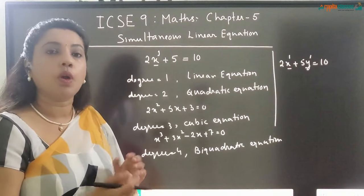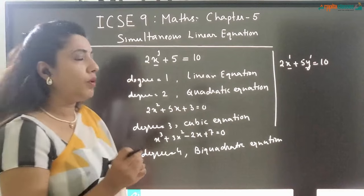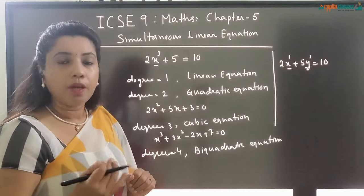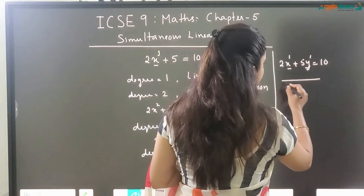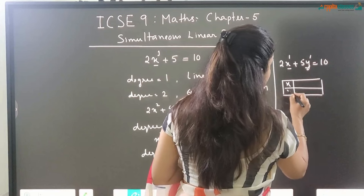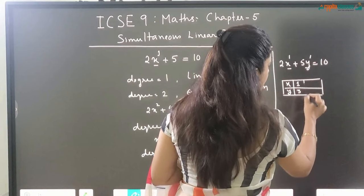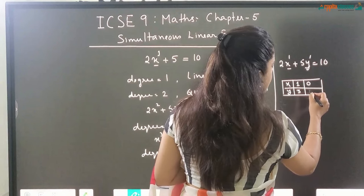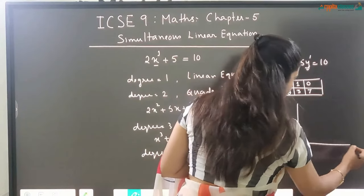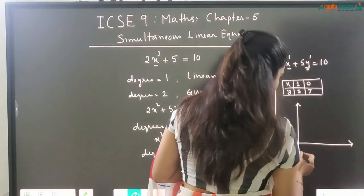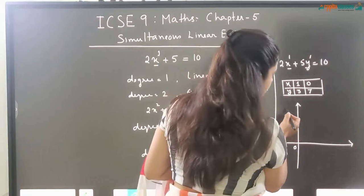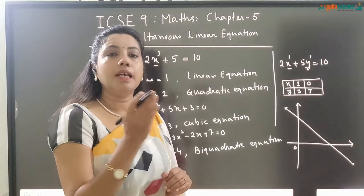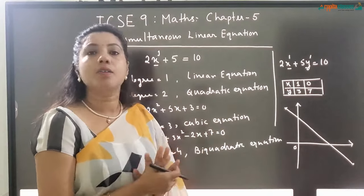When we have a linear equation with two variables, what does it represent? It represents a straight line. If you remember, in our previous classes we used to put the value of x and get the corresponding value of y — doing this at least three times, writing values in a table, say x=1 gives y=3, x=0 gives y=7. Then we used to draw the graph using those coordinates and we used to get a straight line. So a linear equation with two variables represents a straight line — it is an equation of a line.